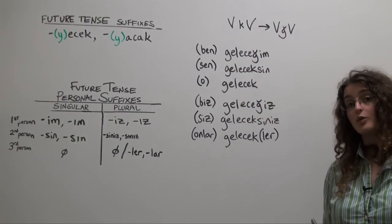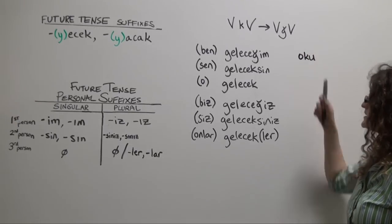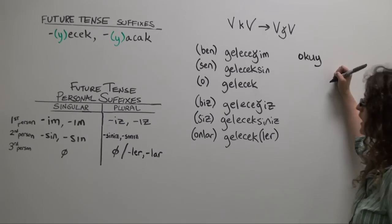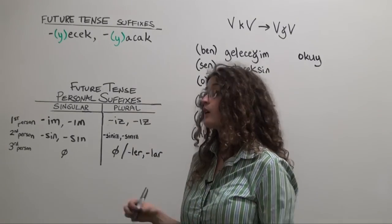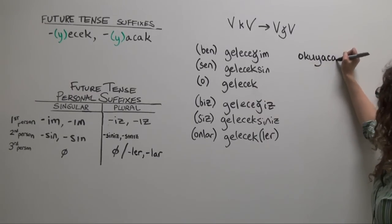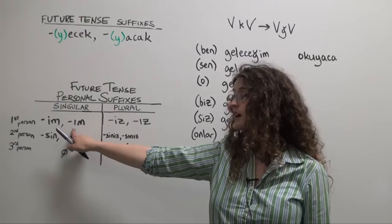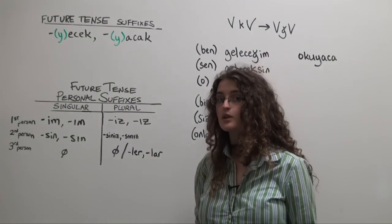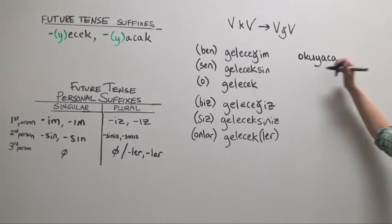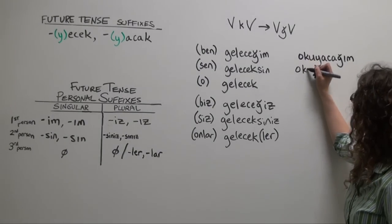For our example verb, we're going to use okumak, to read. Oku. Verb stem ends in a vowel. Now we know we'll definitely need a buffer y, buffer y. Oku ya. The rules of two-way vowel harmony tell us we're going to choose acak as our form of the future tense suffix. So okuyaca. We know we're going to be adding our first person singular personal suffix, which begins in a vowel, so we're going to have another one of those ks sandwiched between two vowels. So okuyaca um. Okuyacağım. I will read. Sen oku,